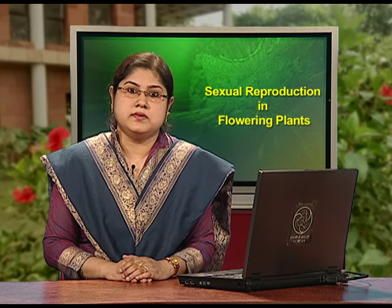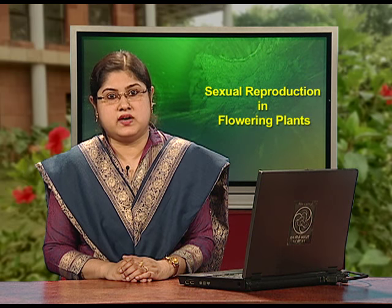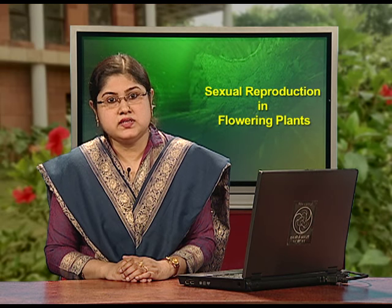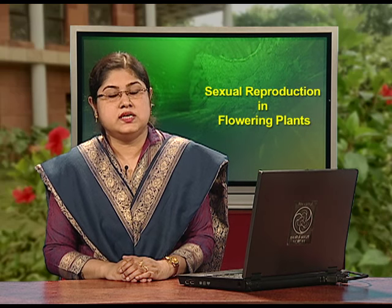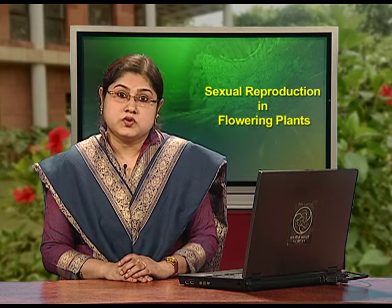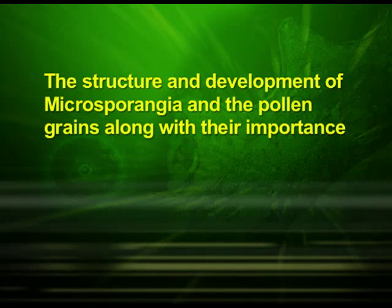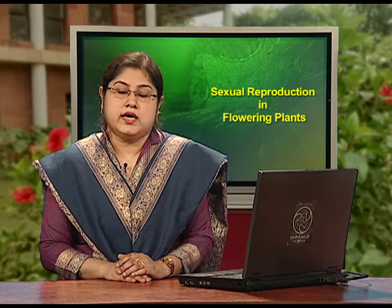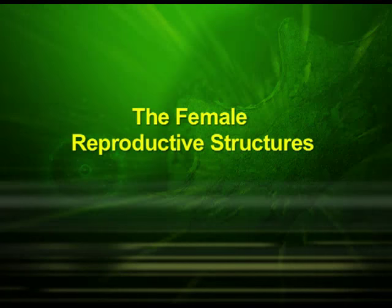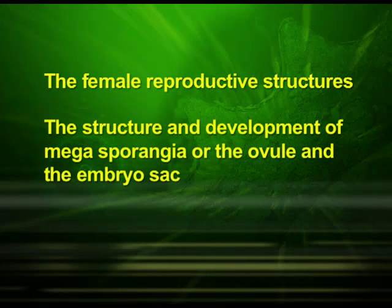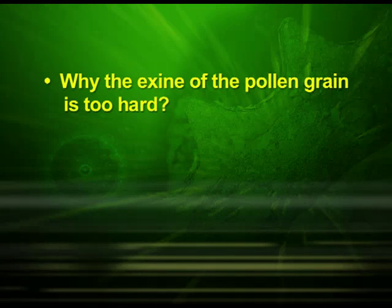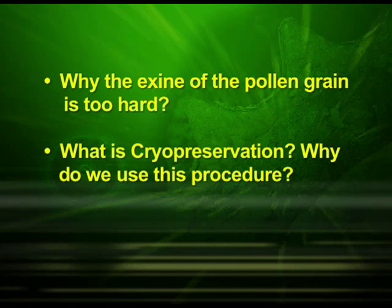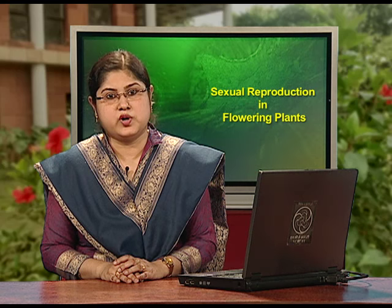So friends, I have come to the end of the first part of this lesson on sexual reproduction of flowering plants. Today we have discussed the flower, its role as an organ of sexual reproduction in flowering plants, the reproductive parts — the stamen and the pistil — and the structure and development of microsporangia and the pollen grains along with their importance. In the next episode we will focus on the female reproductive structures covering the megasporangium or the ovule and the embryo sac. I will leave you some points for thinking: Why is the exine of the pollen grain so hard? What is cryopreservation and why do we use this procedure? We will discuss these points in the next lecture.